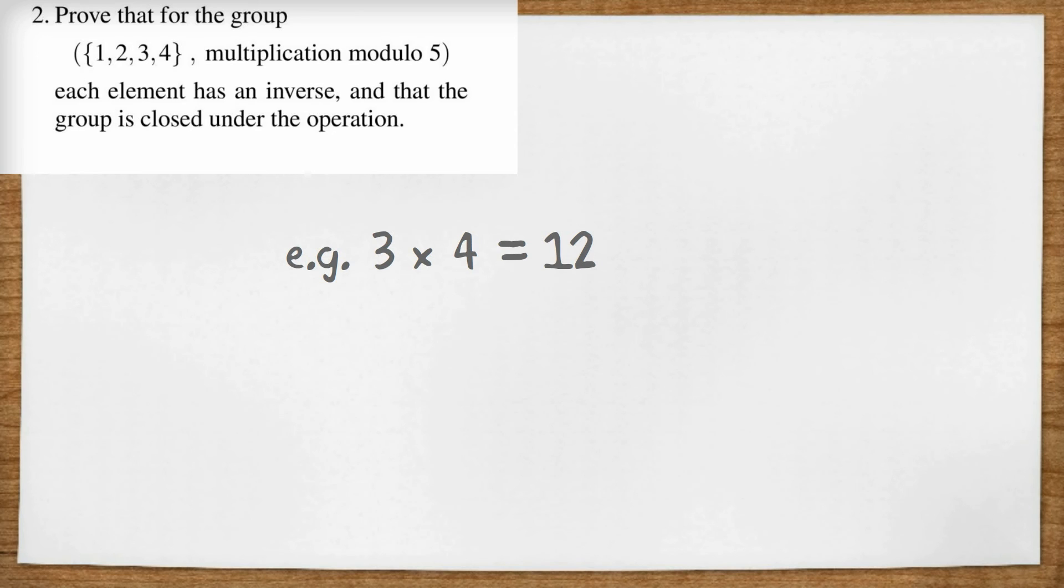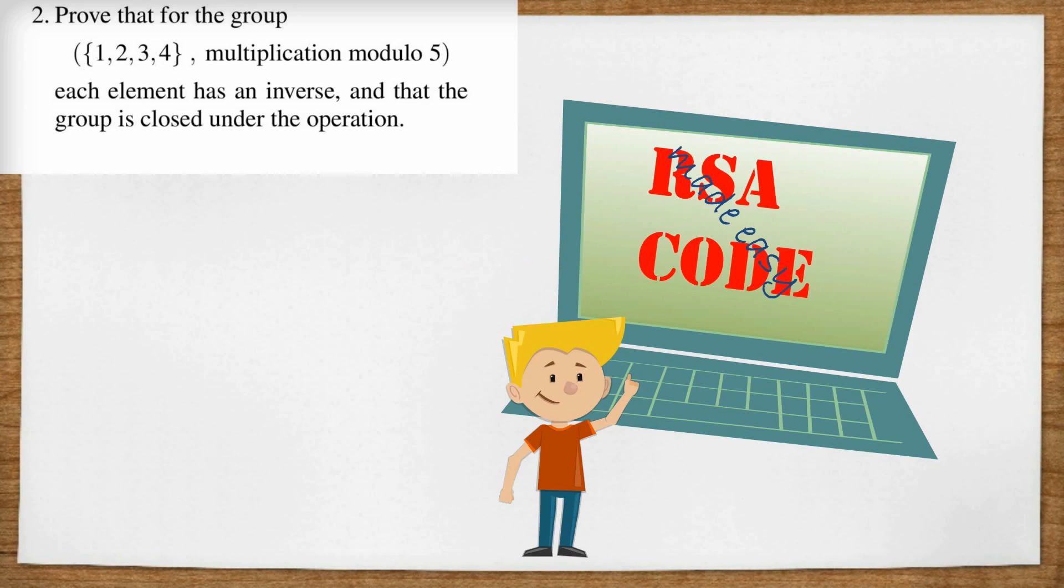Now the operation is multiplication modulo five. This means we express all the answers in terms of the remainder when we divide by five. For example, three times four would normally be 12, but because we're dealing in modulo five, we're just going to write two because that's the remainder of 12 divided by five. Most of the internet security in the world is based on this sort of modulo multiplication. If you're interested, have a look at my video, RSA code made easy.